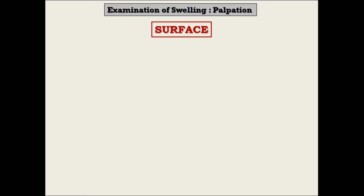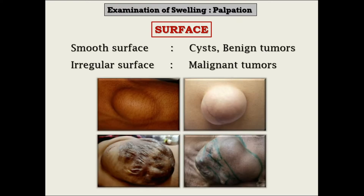After temperature and tenderness, the next parameter we should assess in a swelling is its surface. We already talked about this feature in inspection. Benign tumors and cysts usually have a smooth surface, while irregularity is mostly suggestive of some malignancy — but this is not a strict rule, as exceptions are always there.